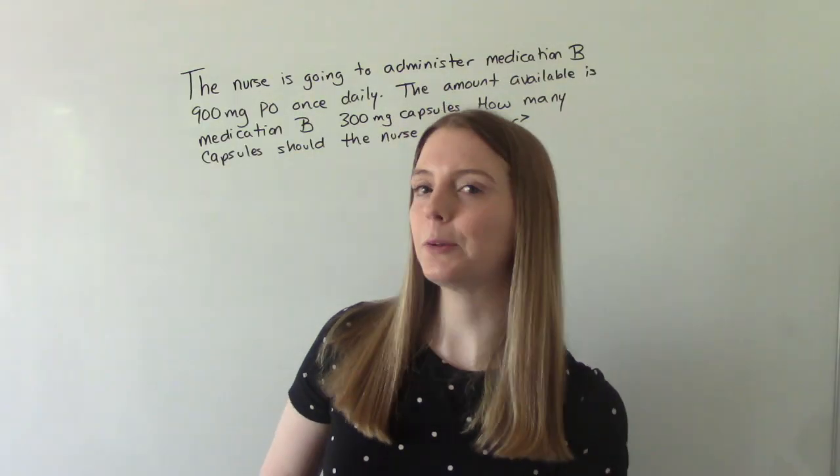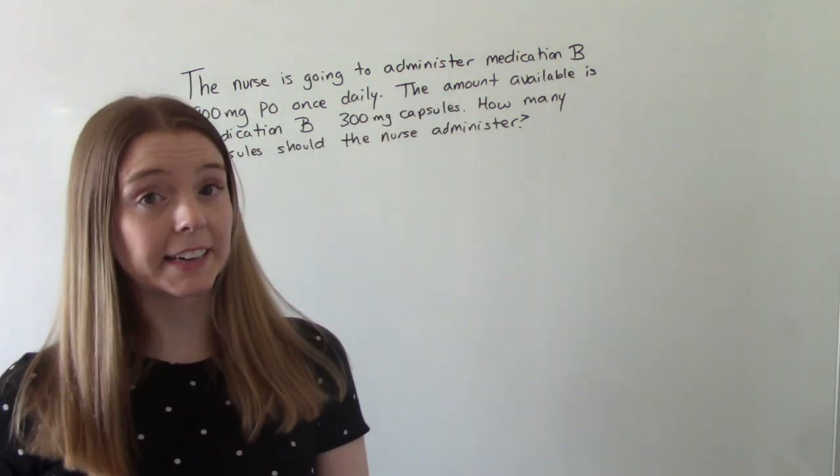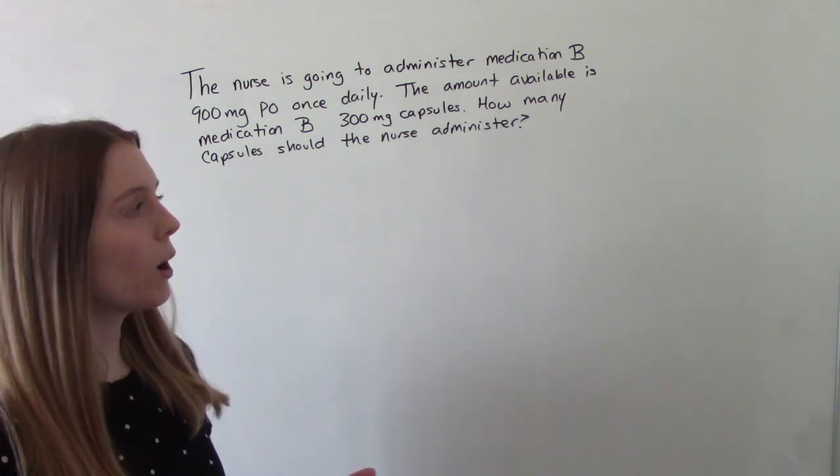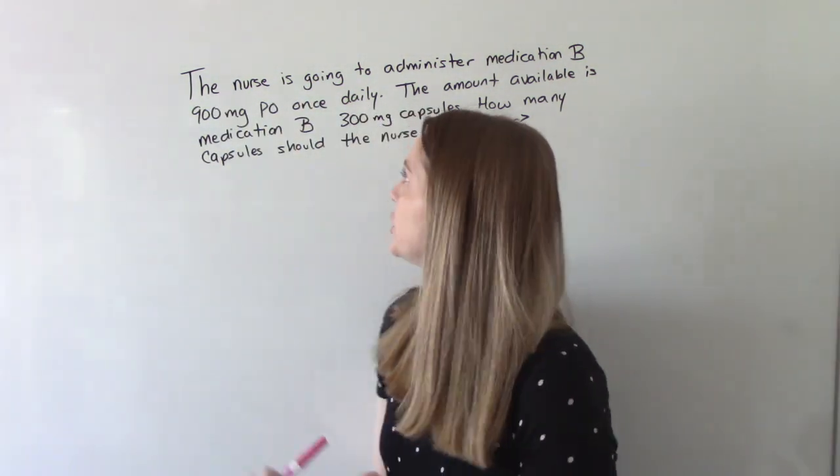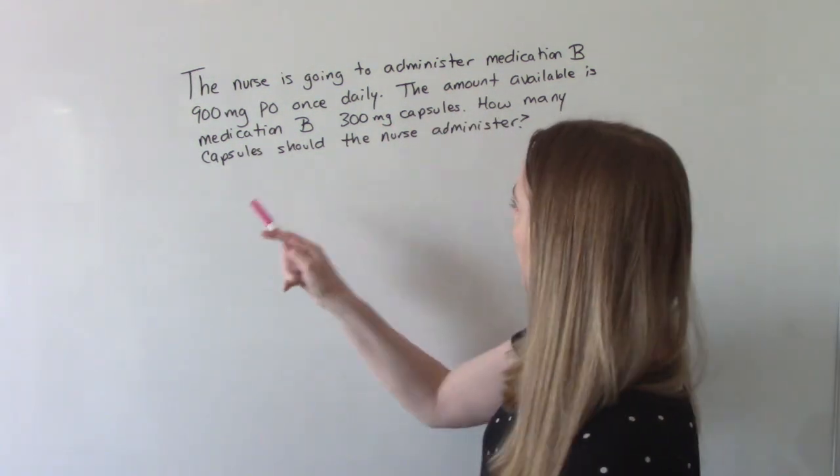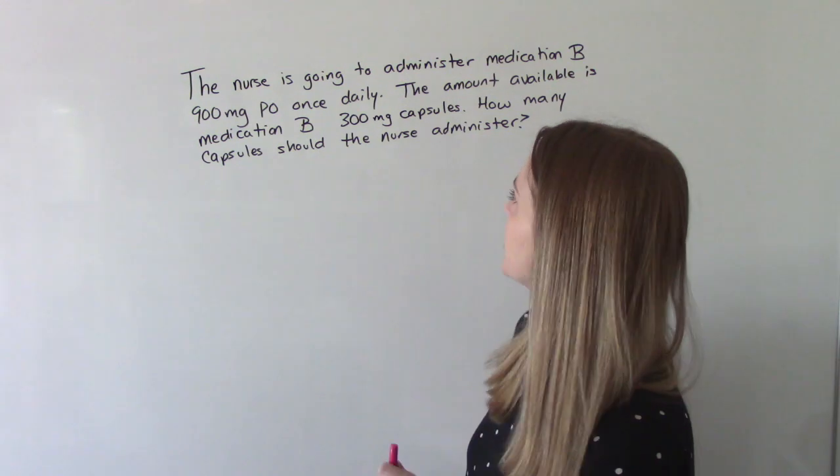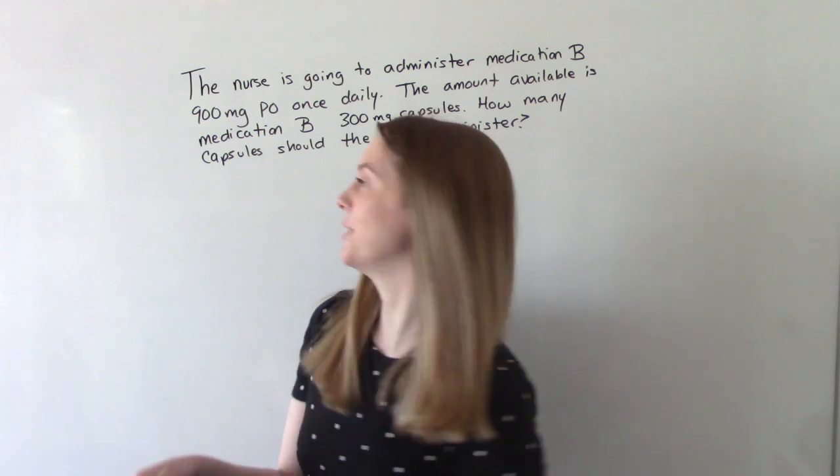One final problem. The nurse is going to administer medication B, 900 milligrams PO once daily. The amount available is medication B, 300 milligram capsules. How many capsules should the nurse administer? So we'll take a second pause. And we're back. Let's figure it out.